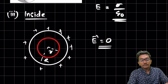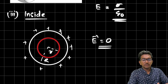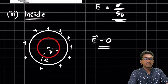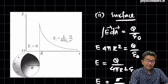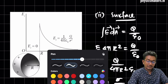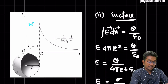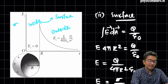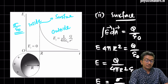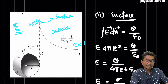So the electric field inside a hollow spherical shell is zero. Now let's look at the graph. Inside the shell, E is zero. The maximum value occurs at the surface, which equals Q/(4πR²ε₀) or sigma/ε₀. Outside the shell, E is inversely proportional to r squared.